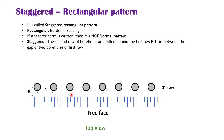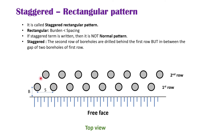The last one is the staggered rectangular pattern. It is rectangular because the burden is less than the spacing. Since the stagger term is written, the second row boreholes are drilled behind the first row but in between the gap of two boreholes of the first row — so the boreholes are staggered and the burden is less than the spacing.